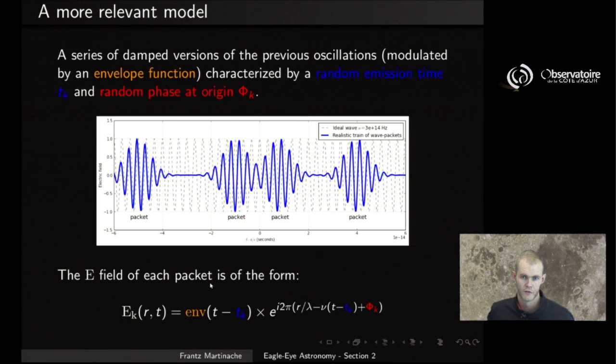Now the way you would write the electric field for each of these packets is to modify our original form, which just included this exponential term here, and what you're going to do is simply multiply it by the shape of the envelope here. In addition, what you see is that you have the origin, the time of emission t_k, occurring in the shape of the envelope and in the origin of the time here, and in addition, this random phase at origin phi_k.